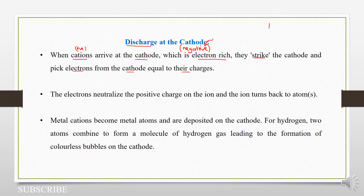So let us say this is our cathode. This is our electrode connected to the negative terminal, so it has an overall negative charge. So if this is our cathode,